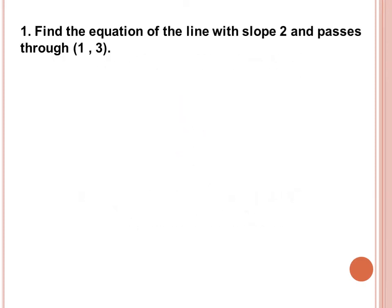Let's have Example 1. Find the equation of a line with slope 2 and passes through the point (1, 3). First, let us write down the given: m is equal to 2, that is the slope, and our given point is (1, 3).